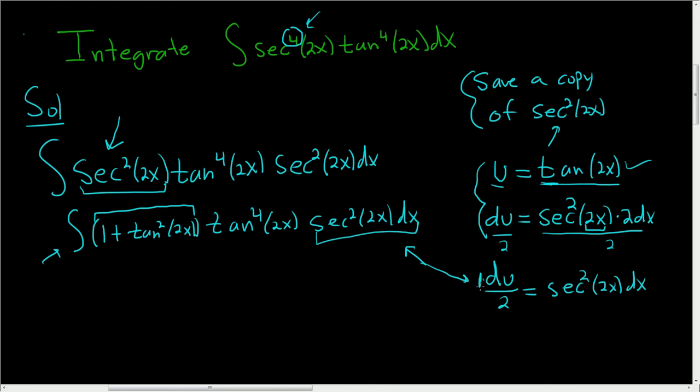Now this 1 over 2 here, let's pull this out. So this is 1 half the integral of 1 plus u squared times u to the fourth du. That looks a lot better. So again, it's 1 plus u squared times u to the fourth, and then this piece here was du over 2, and we took the 1 half outside.